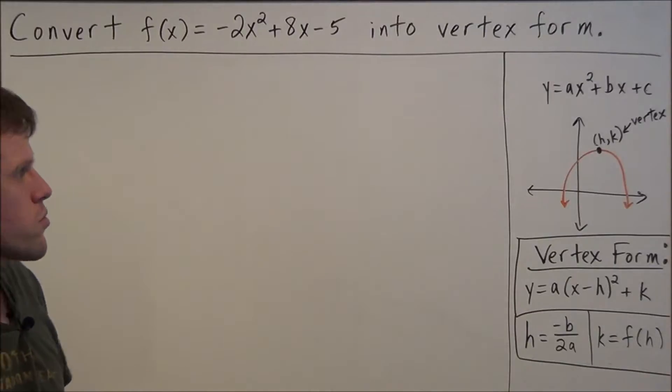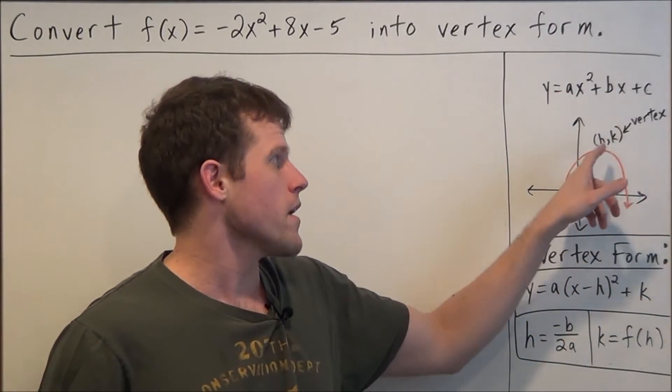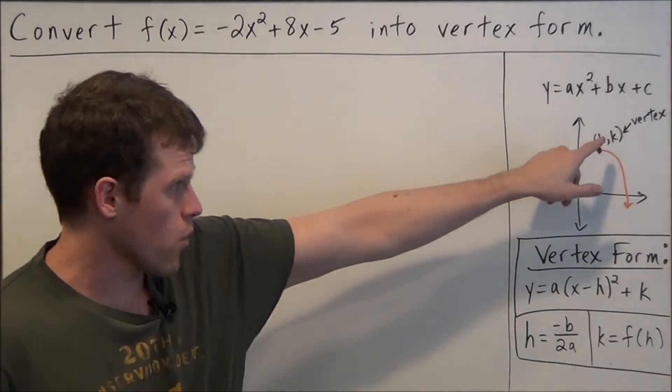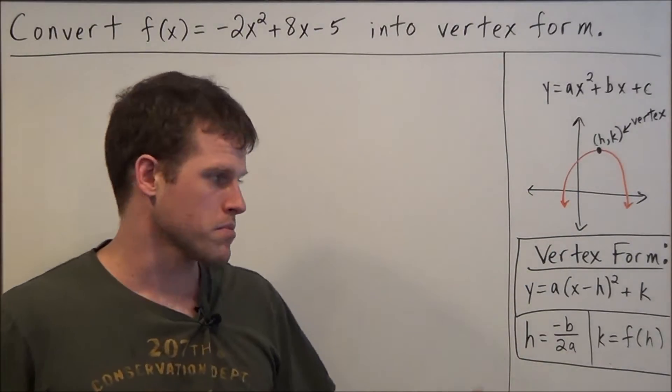So what we need to do is we're going to find the vertex of our quadratic equation and the coordinate is represented by h, k. And once we have our vertex and we identify our a value, we'll be able to complete this transformation.